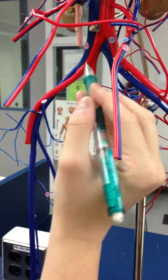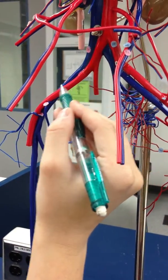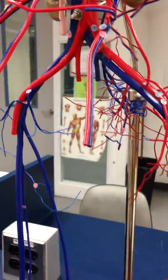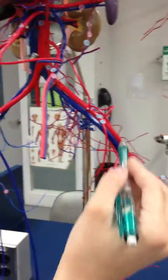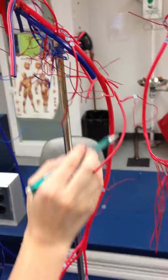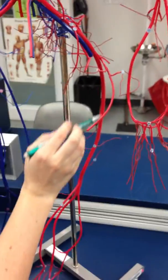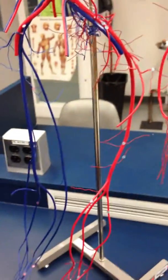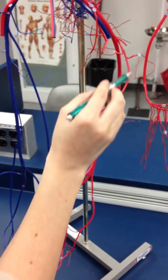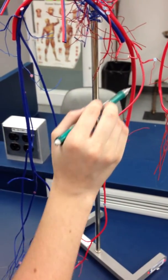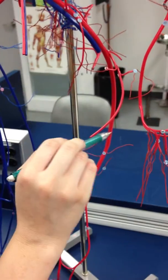The external iliac is this one here. The femoral artery is this one right here in the leg. The lateral femoral circumflex artery is this one which comes around and that is number 118.